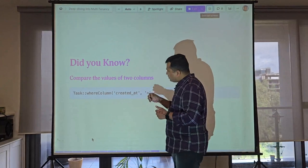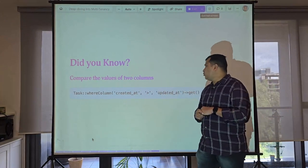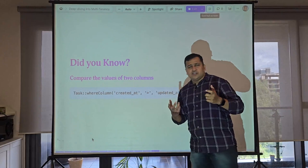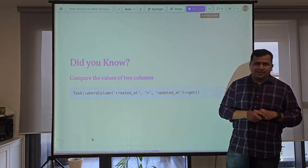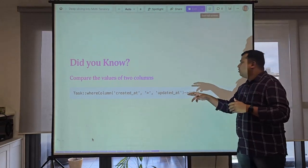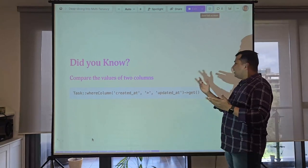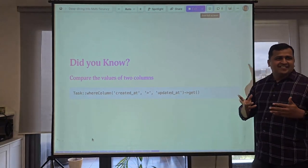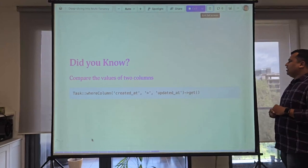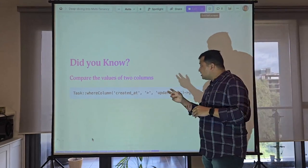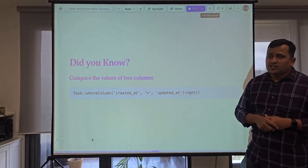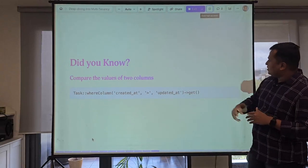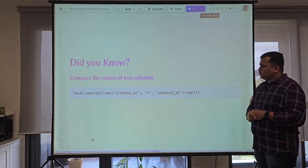A useful Laravel tip: if you need to run a query on two different columns of the same table — like getting all tasks where created_at is greater than updated_at — you can use whereColumn instead of writing a raw query.